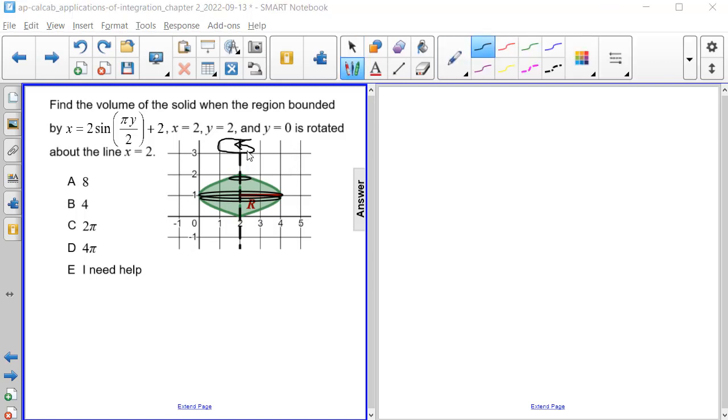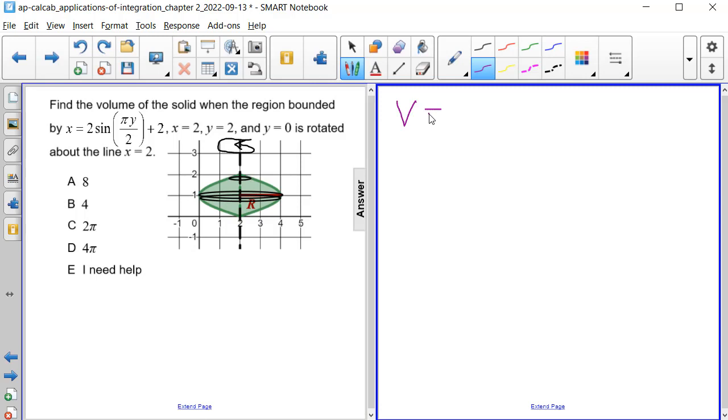So because it's being rotated about a vertical line, we're going to need to have our integral in terms of y. So we know that the volume is going to be pi times our integral, and we're going to integrate with respect to y. We have to determine what our radius value is and we're going to square it, and we also have to determine the lower and upper bounds for integration.